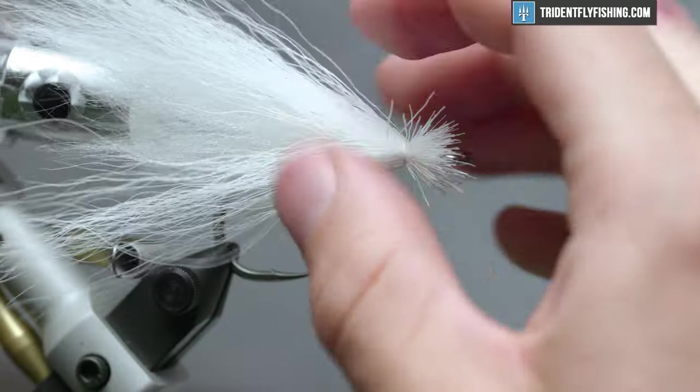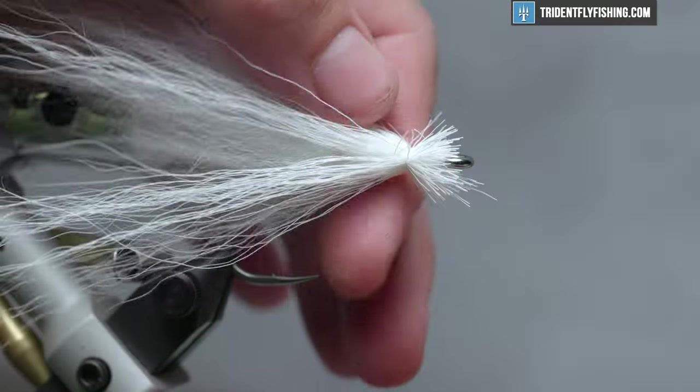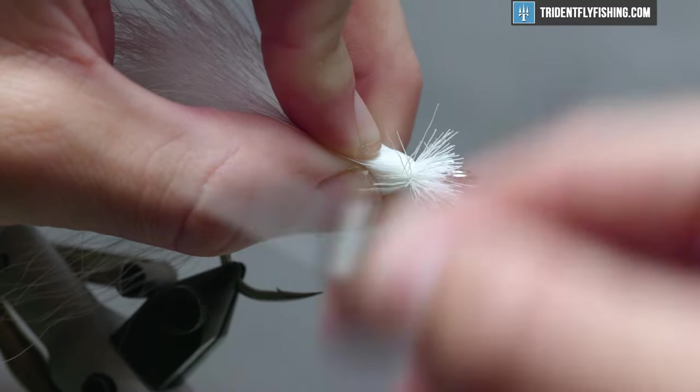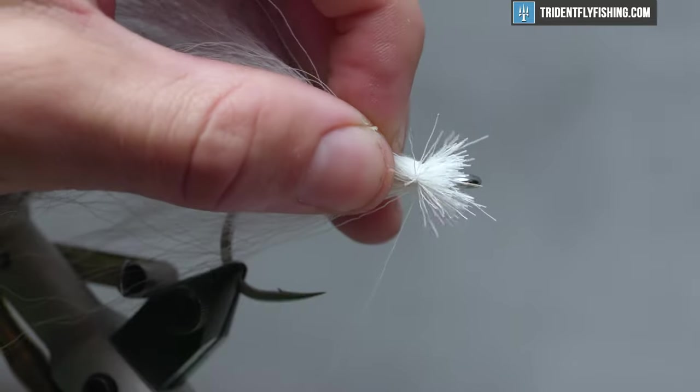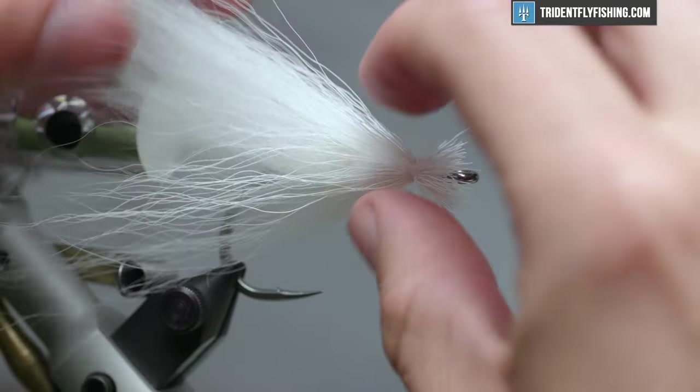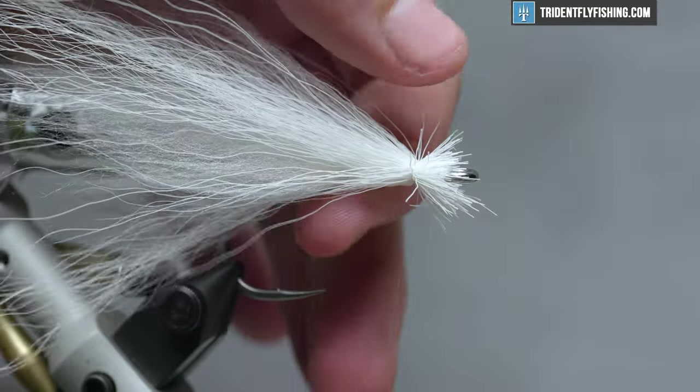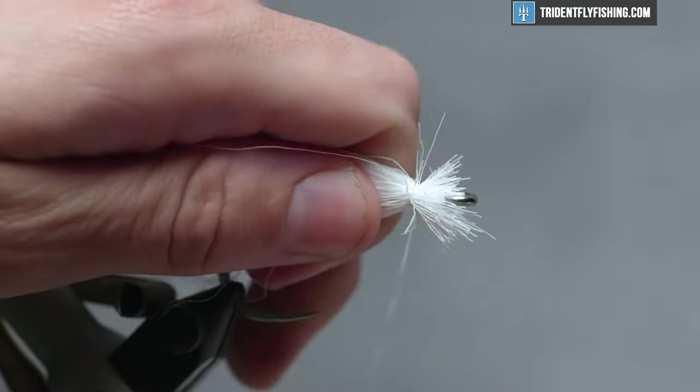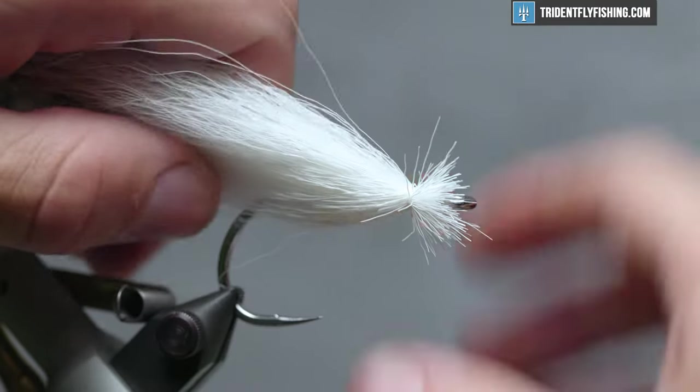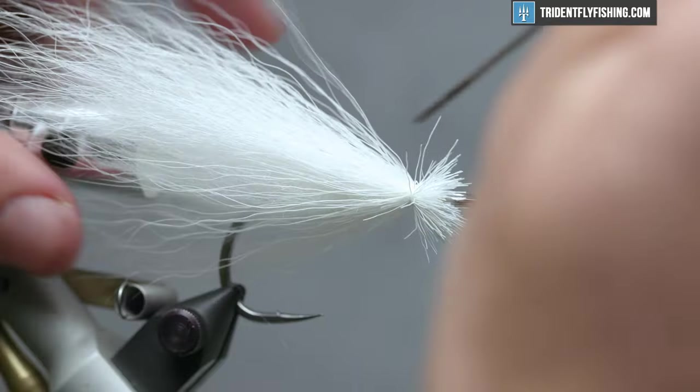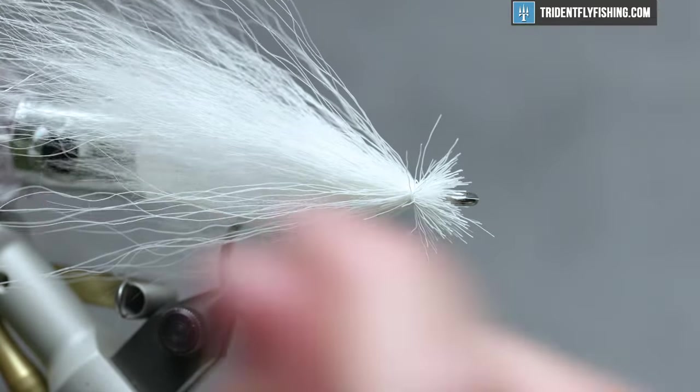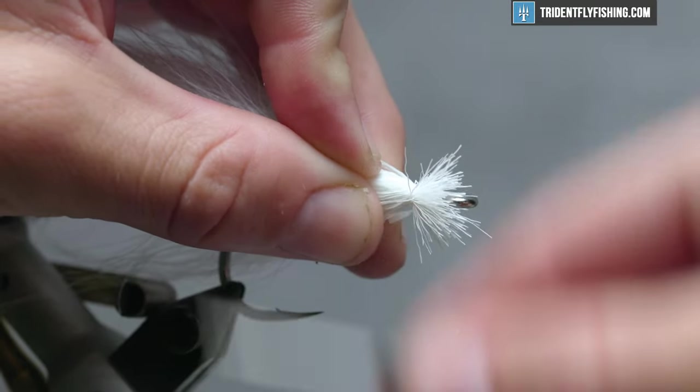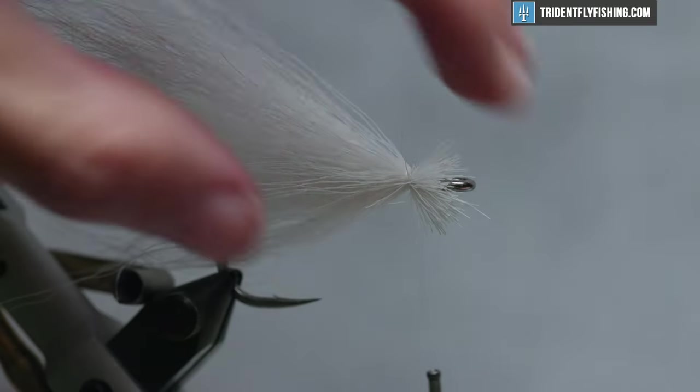We're almost there. I want to get these fibers on this side. This is sort of just a tedious process. It helps to have thread pressure when you need it and take it off whenever you need to adjust those fibers. And you'll see this looks sort of crazy, but take it out of the vise after you're done tying and soak it in some water and let it hang dry. And you'll definitely like the way it looks after that. A few more neatening wraps.